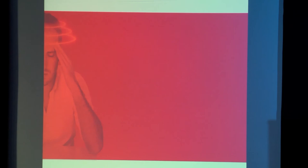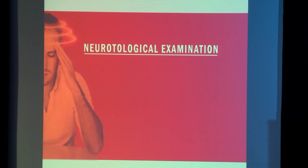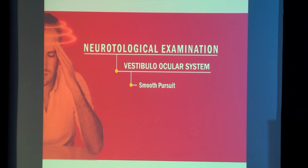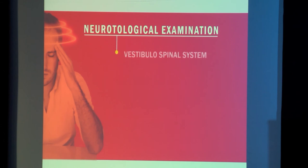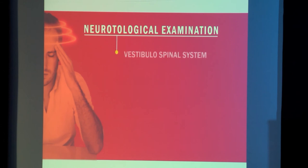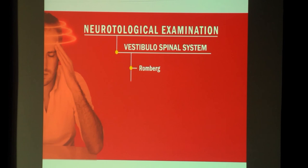For specific neuro-otological examination, we have already described since morning how we go through the vestibulo-ocular and vestibulo-spinal systems. We have seen how to test smooth pursuit and saccades, which can be assessed in our clinical setup using video Frenzel or Frenzel glasses. We can perform the head impulse test with the help of the VHIT machine. For the vestibulo-spinal system, we have the Romberg's, Fukuda's, and Unterberger's tests, which suggest unilateral vestibulopathy.